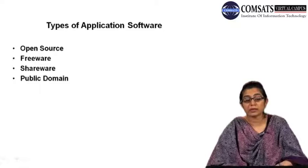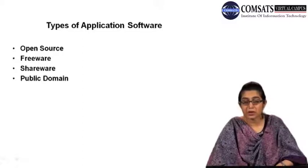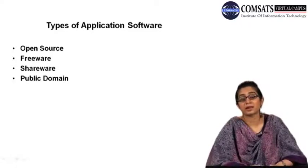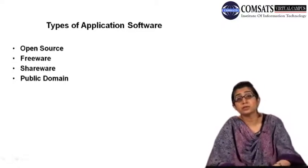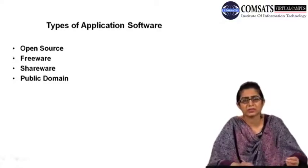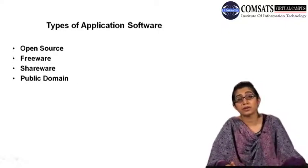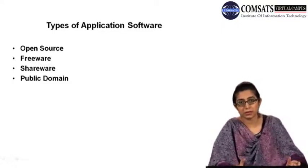After that we come to three more categories of application software: freeware, shareware, and public domain software. Many people are now moving towards programs freely available on the internet. Freeware and shareware fall under those categories that are less expensive or almost free of charge — you can download and use these programs. Most anti-virus programs and spyware programs fall under these categories, as do music programs.